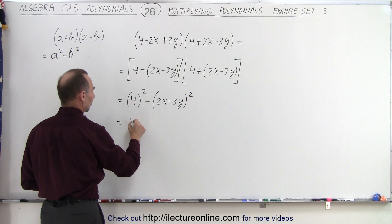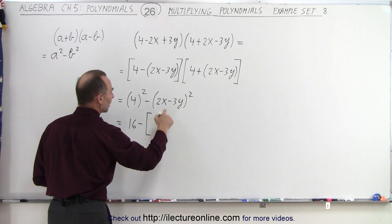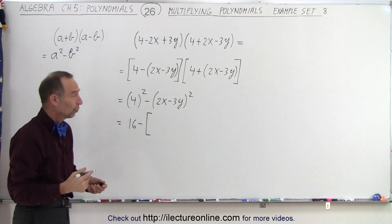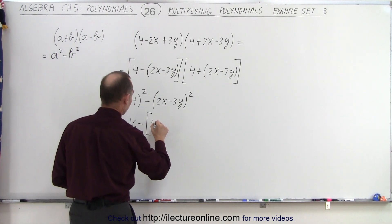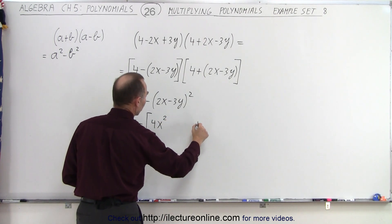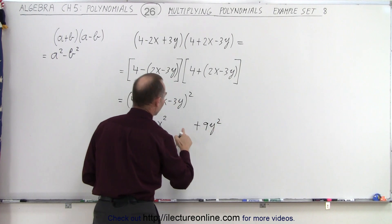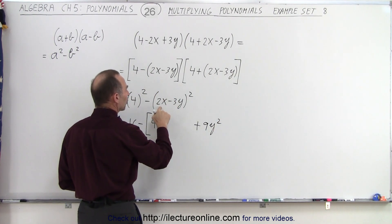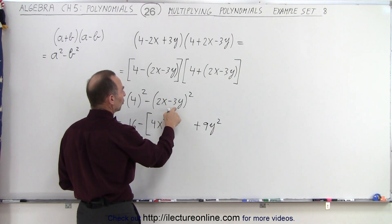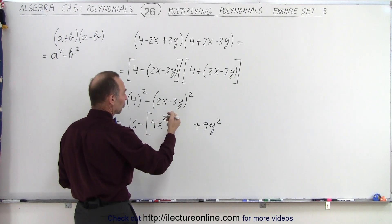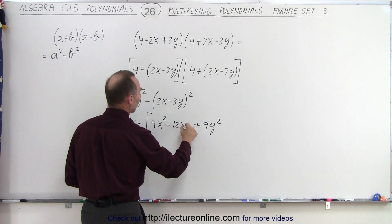This equals 16 minus a binomial squared. So we take the first term squared, that's 4x², plus the last term squared, which is 9y². For the middle term, it's twice the product of these two. The product of these two would be -6xy times 2, which is -12xy.